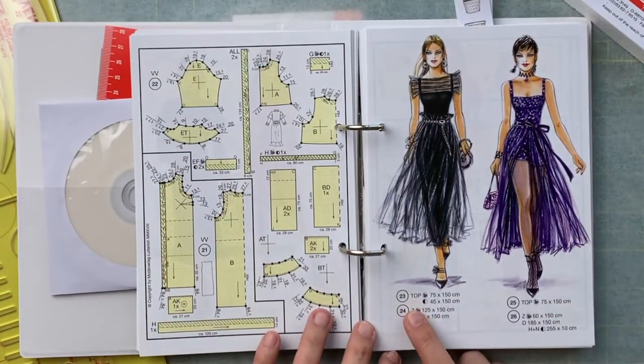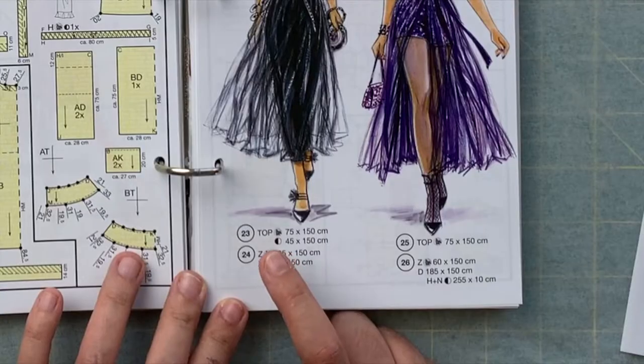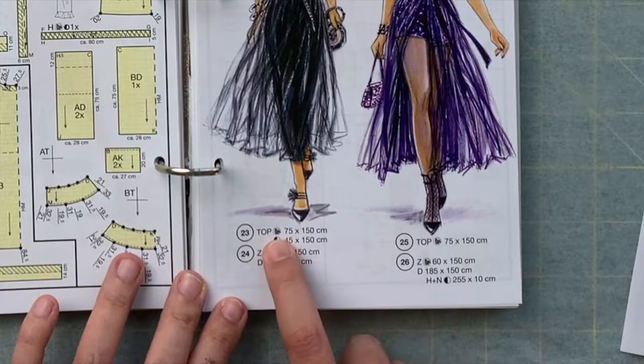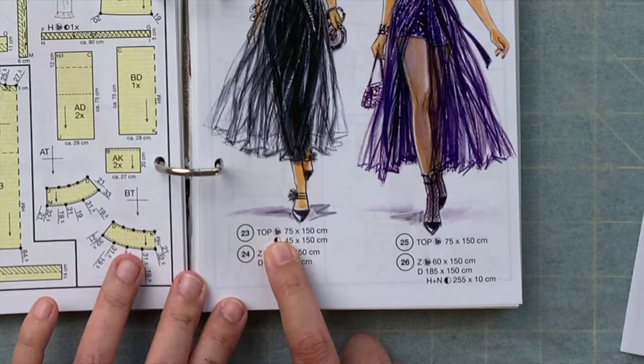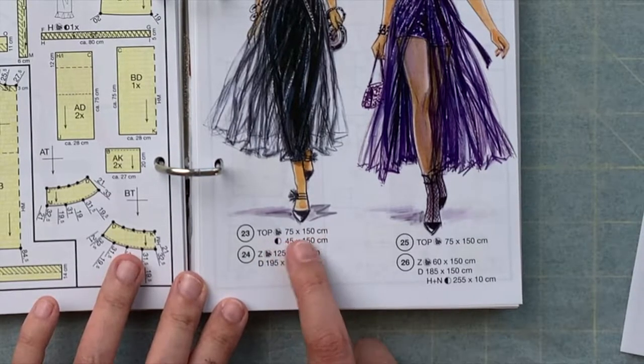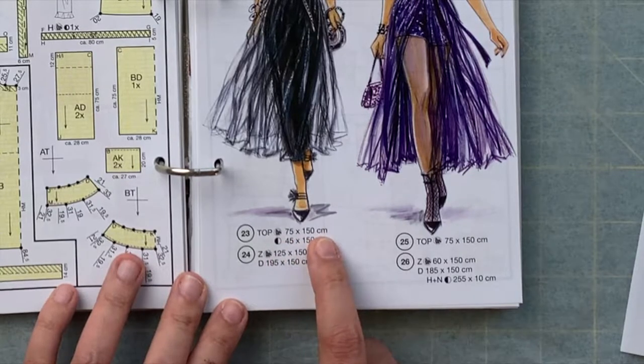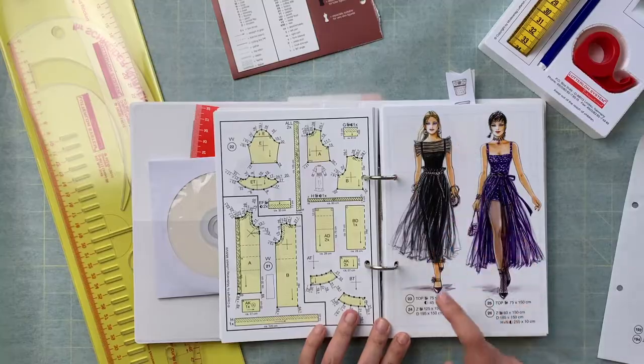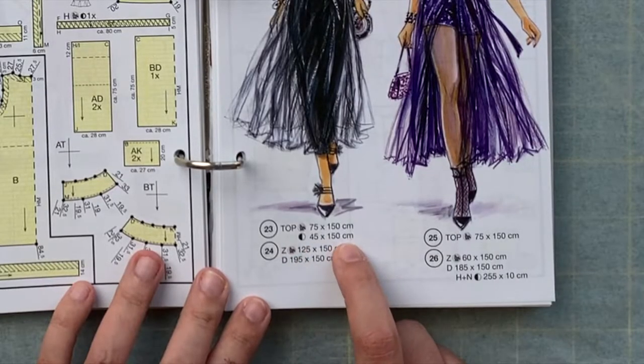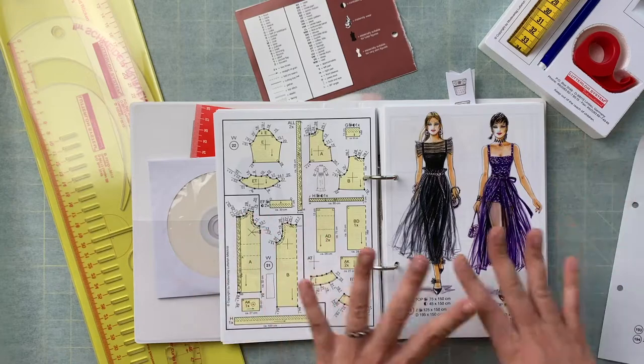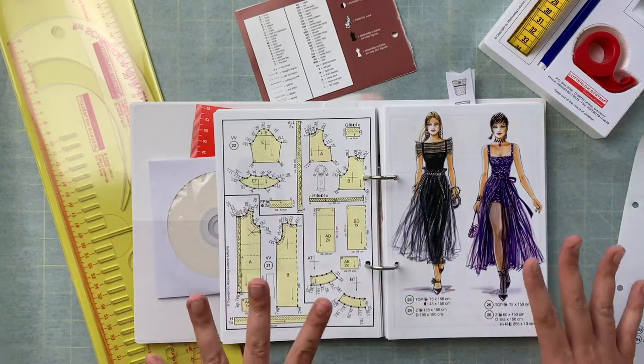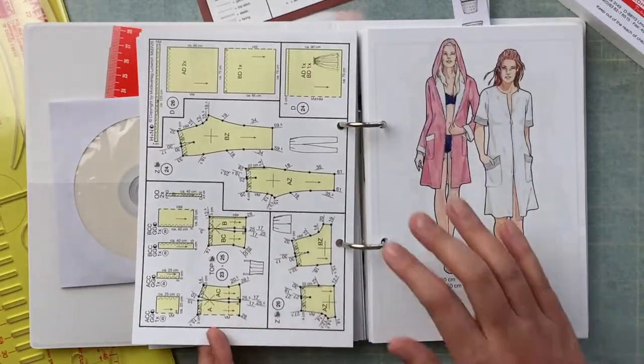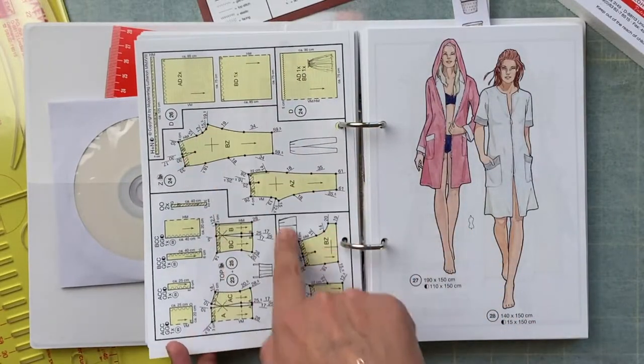If we look here, we can see that pattern number 23 is a top and it is suitable for knit fabrics. This is the amount of fabric that you would need to buy. This is your fabric requirements, and then there is a contrast piece which is this here, and this is how much fabric you would need for that contrast piece.